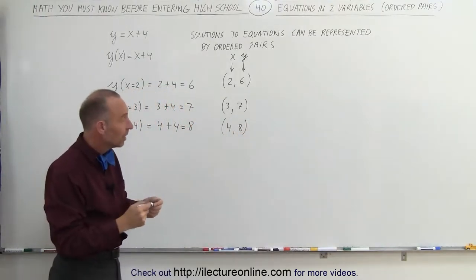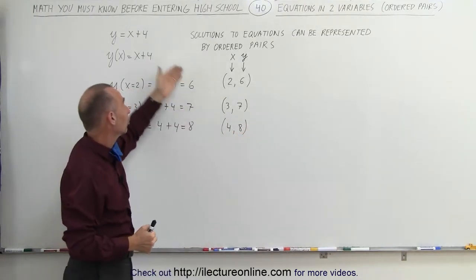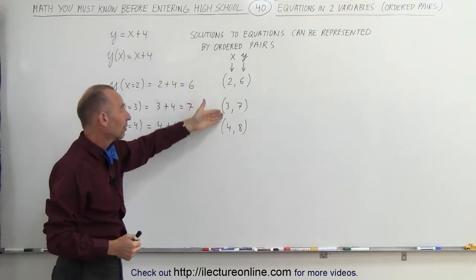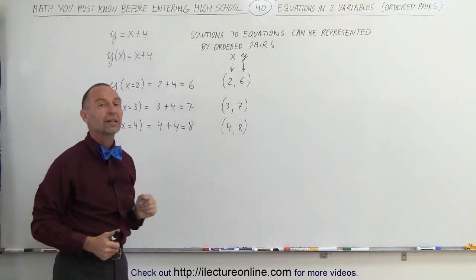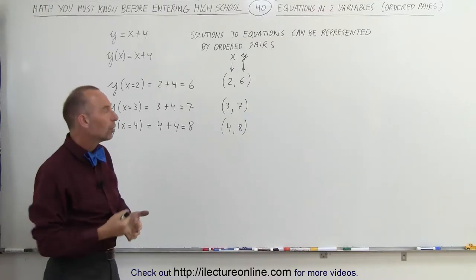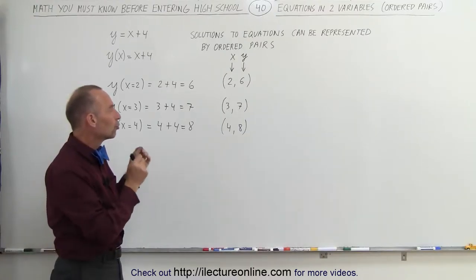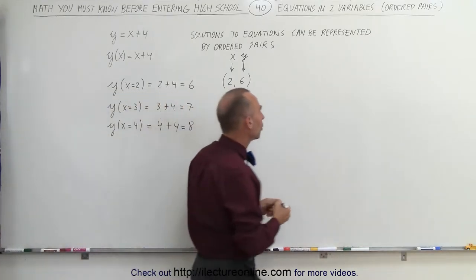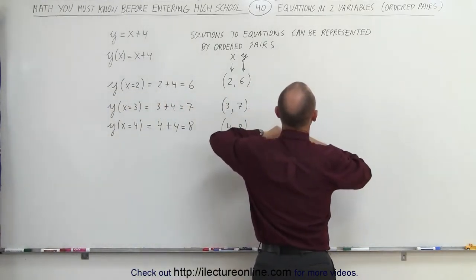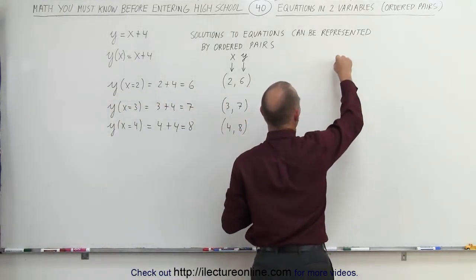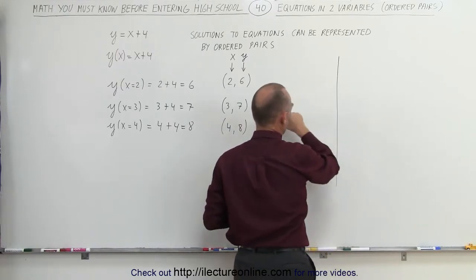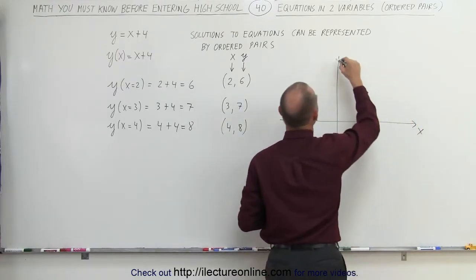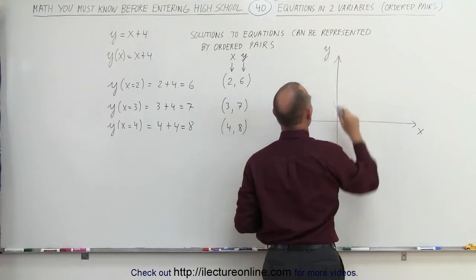So you can see that you can represent the solution to this equation by plugging in particular values for x and getting corresponding values for y. We can also draw those ordered pairs on what we call the x-y coordinate system, or the Cartesian coordinate system. So we draw two lines: a horizontal line representing the x-axis, and a vertical line representing the y-axis.